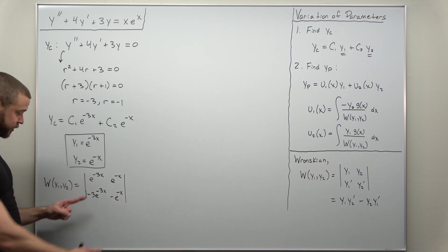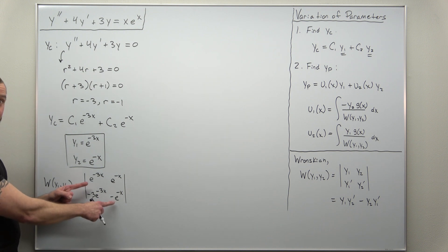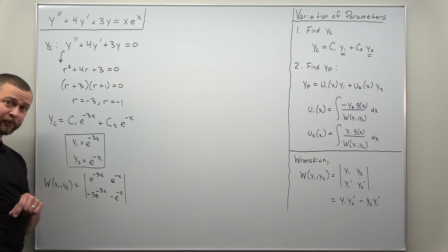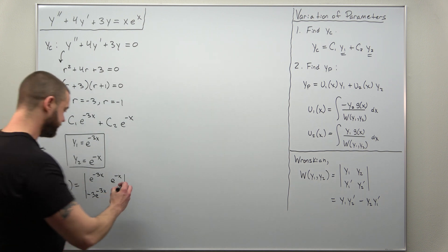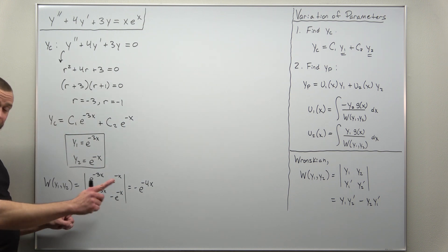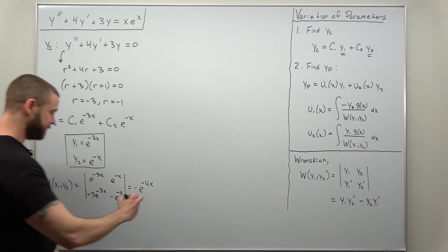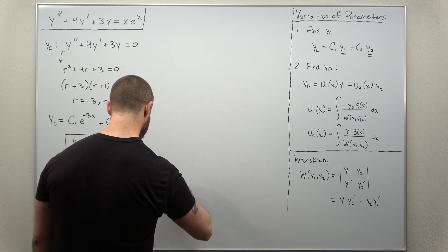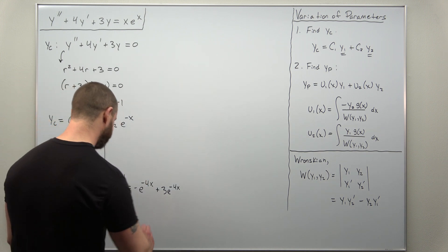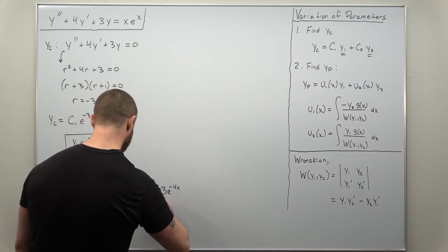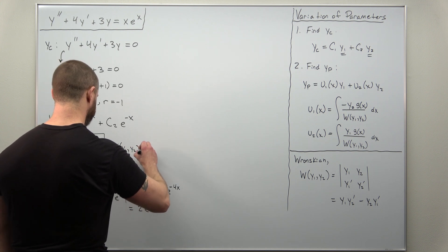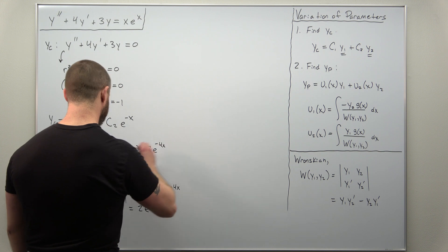Now we calculate this 2x2 determinant. When you multiply terms with base e, you add the exponents. Multiplying the diagonal gives e to the negative 4x. Be careful with the negative — we get negative e to the negative 4x. The determinant subtracts this product, and subtracting a negative gives plus 3 times e to the negative 4x. Simplifying, the Wronskian comes out to 2 times e to the negative 4x.